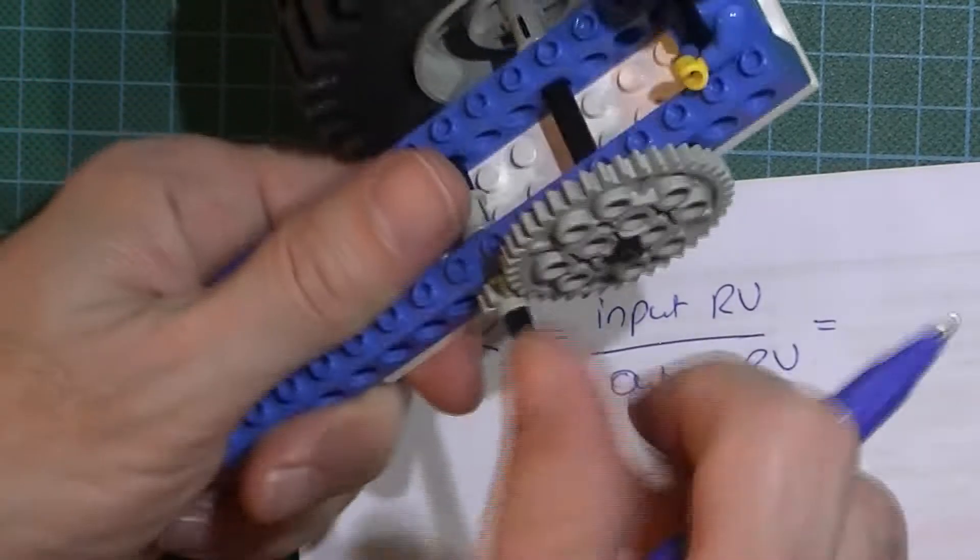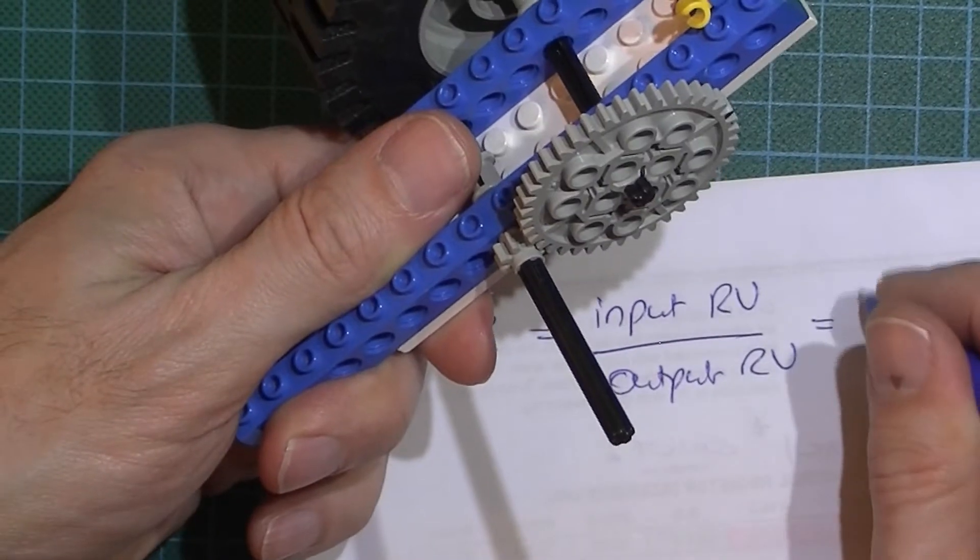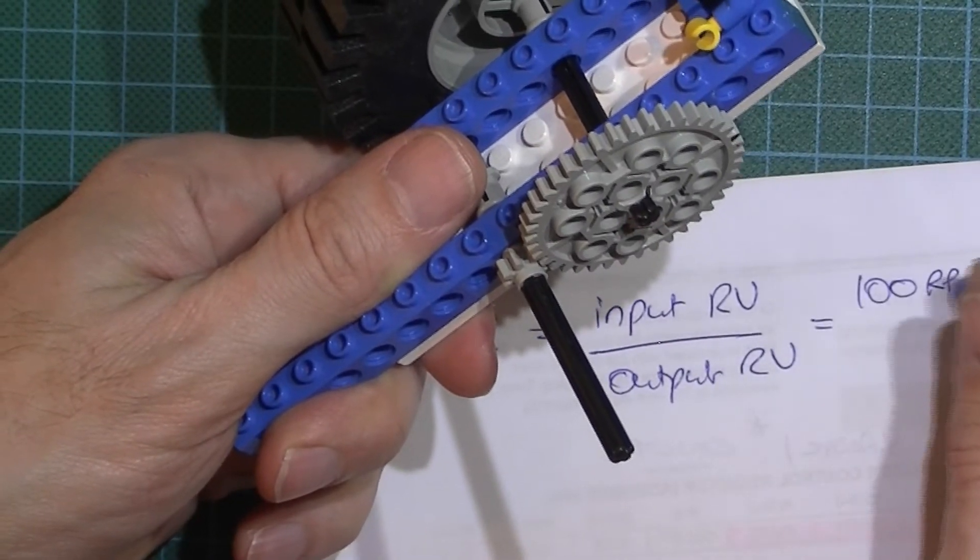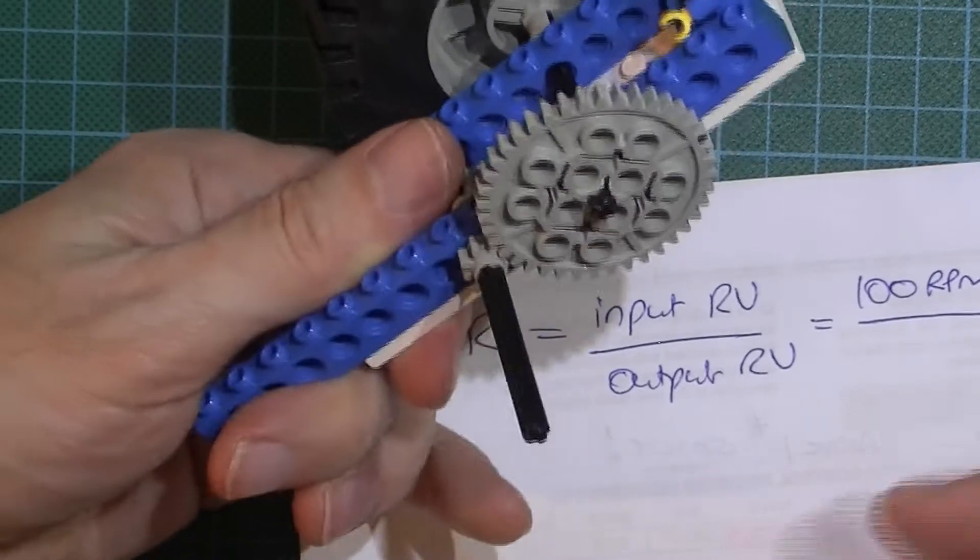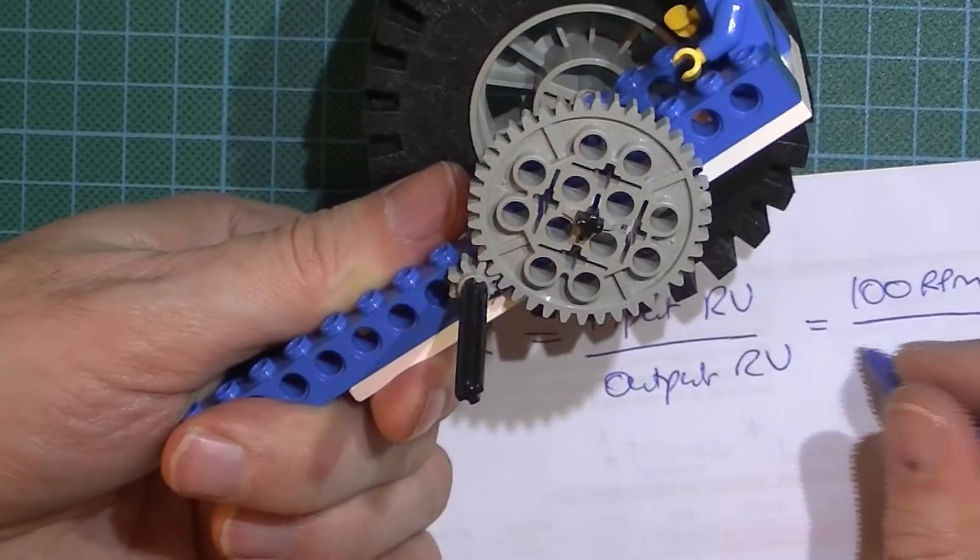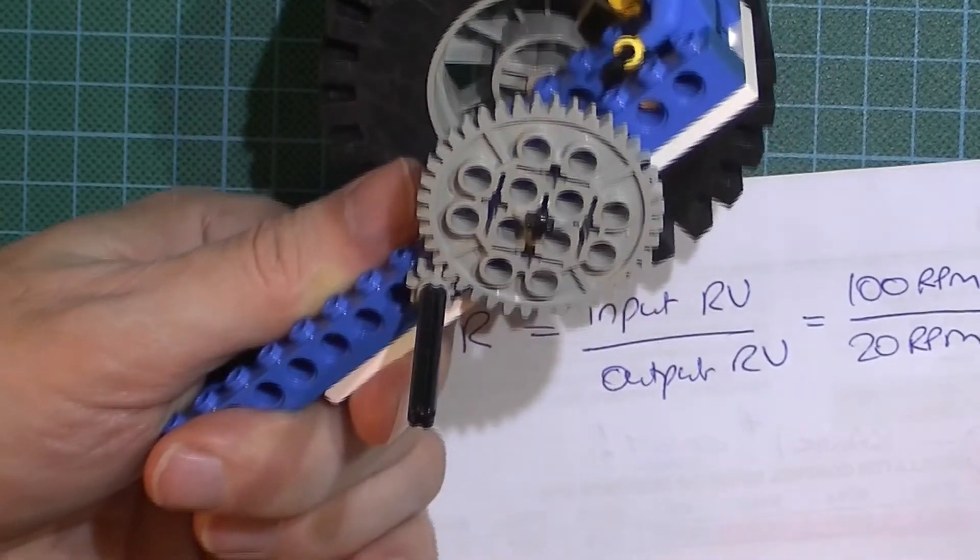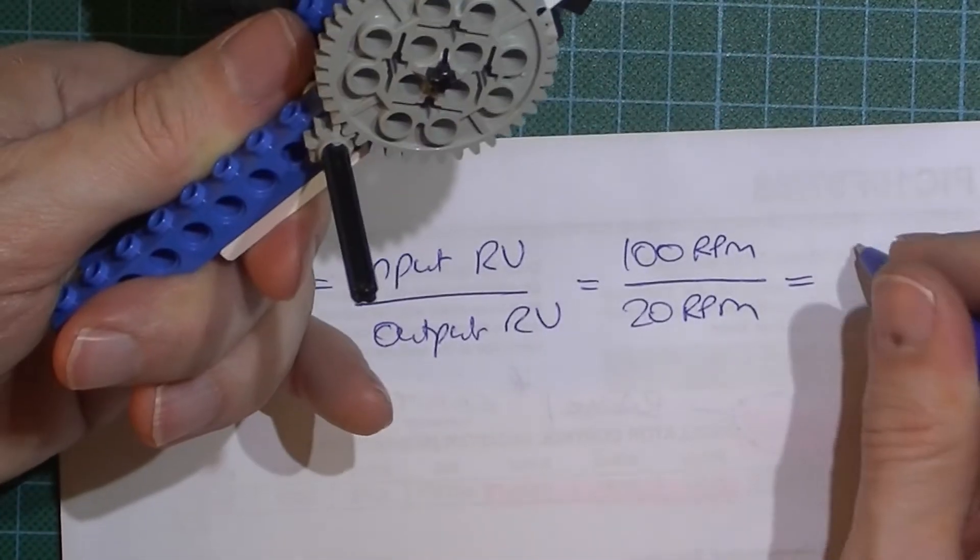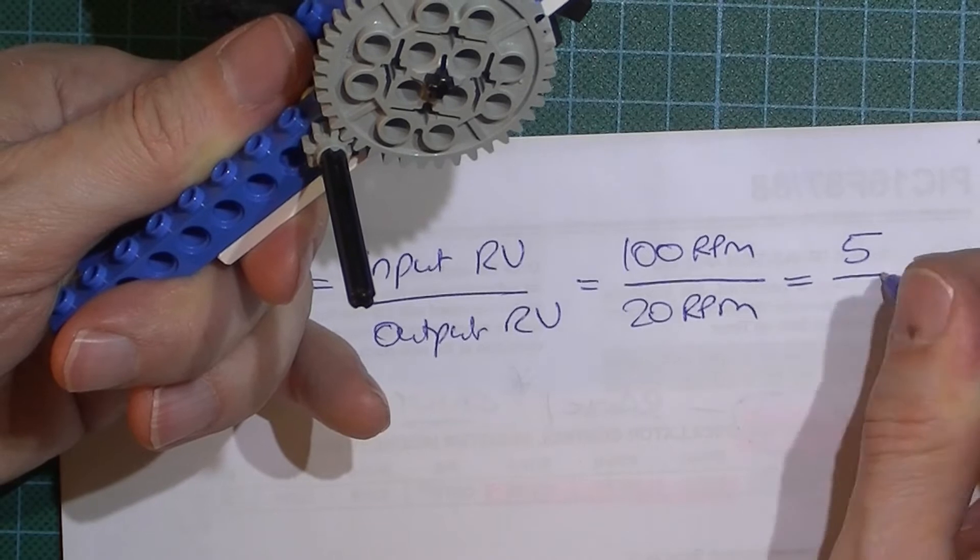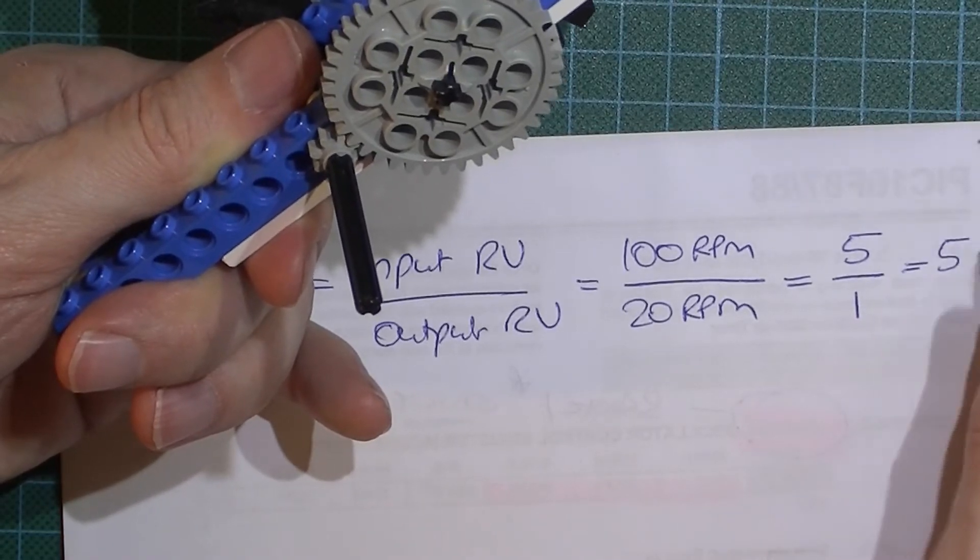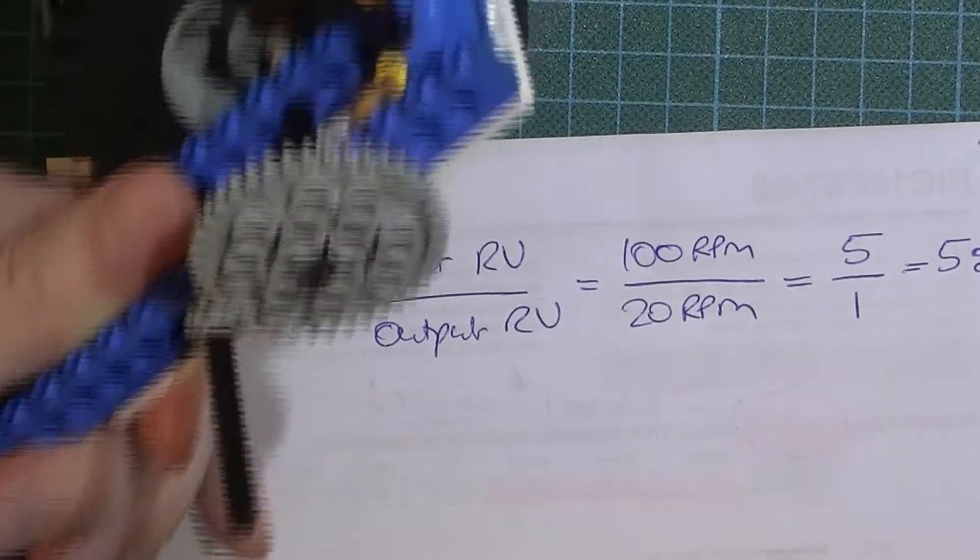So let's assume that this input was spinning at 100 RPM and the output was spinning at 20 RPM. I would have a velocity ratio of 5 over 1, or I could express it as 5 to 1.